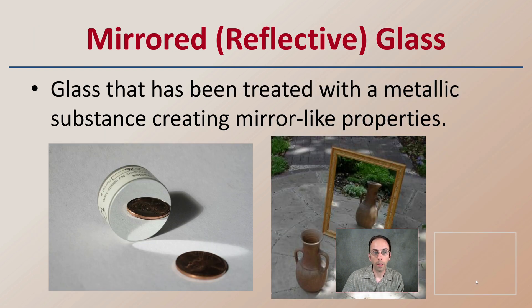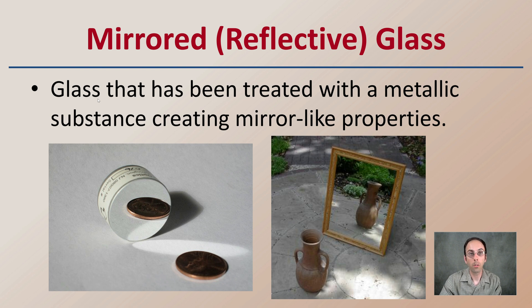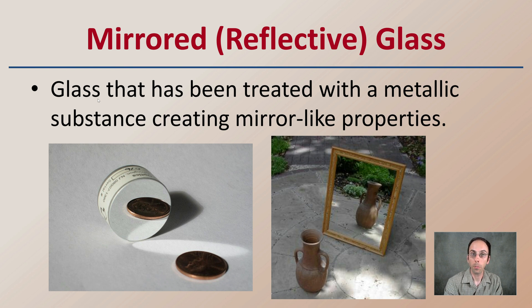Lastly, we have mirrored glass — glass that's been treated with metallic substances, creating mirror-like properties. This is just another type of reflective glass. All of these types have the potential to be found at a crime scene, so now that you're well-versed in them, when picking up pieces of trace evidence you can make these connections, potentially identify the type of glass, and determine where it might be found at a crime scene.